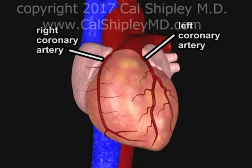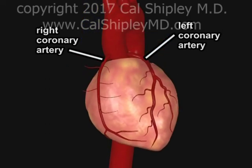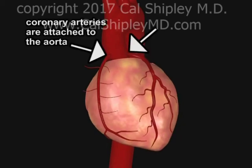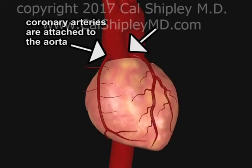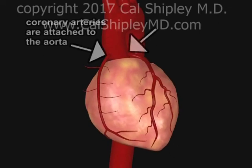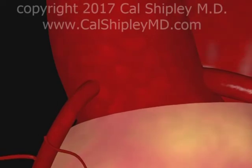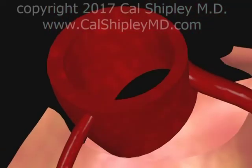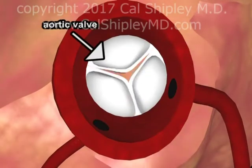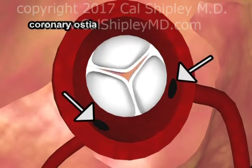The coronary arteries are responsible for conducting nutrient-rich blood to the heart muscle, also known as the myocardium. The coronary arteries are attached to the aorta. Changing to a cross-sectional view of the aorta viewed from above, the opening and closing of the aortic valve during the cardiac cycle can be seen, as well as the coronary artery ostia — openings in the aortic wall which communicate with the coronary arteries.